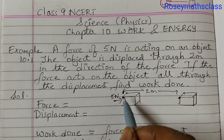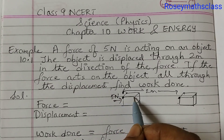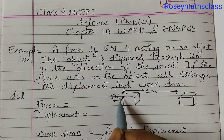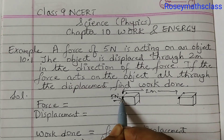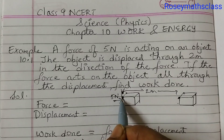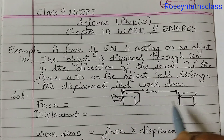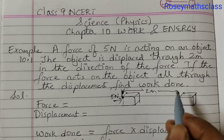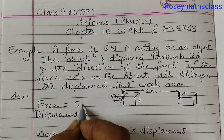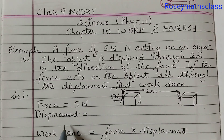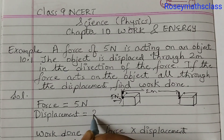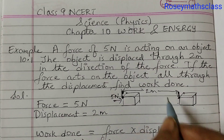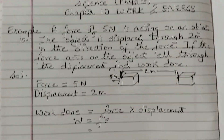Remember, when we are talking about displacement, whichever point you are taking — suppose you are taking this point — so from this point till this point, we always take the start of it. So from here till here is our displacement of 2 meters. Force is given as 5 Newton, displacement is given as 2 meters. We need to find the work done.